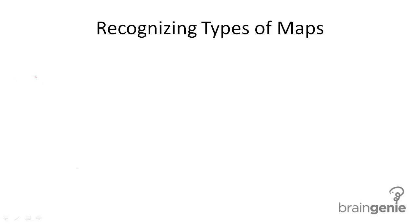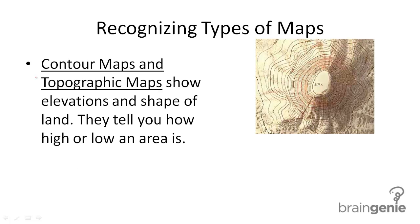There are many different types of maps and today we're going to talk about four of them. The first is called a contour map or a topographic map. Contour maps and topographic maps show elevations and the shape of land, so they tell you how high or low an area is.